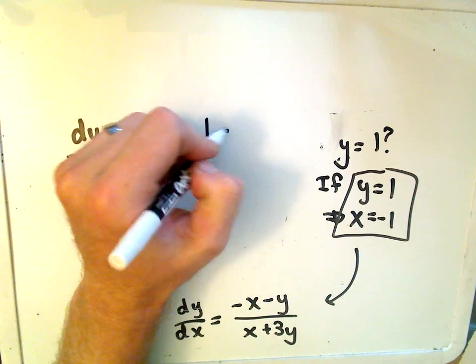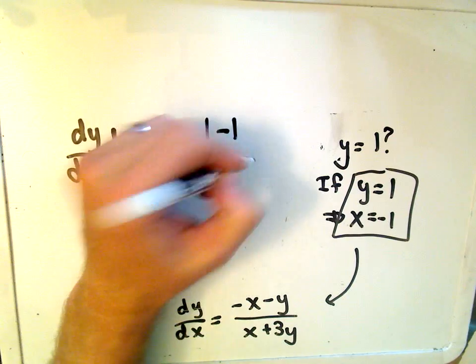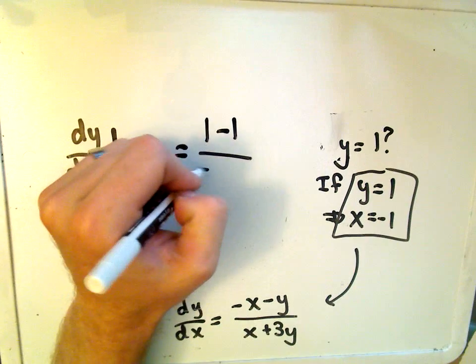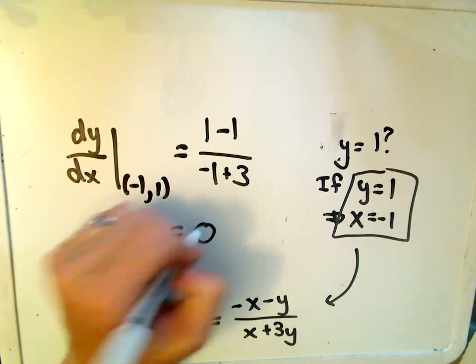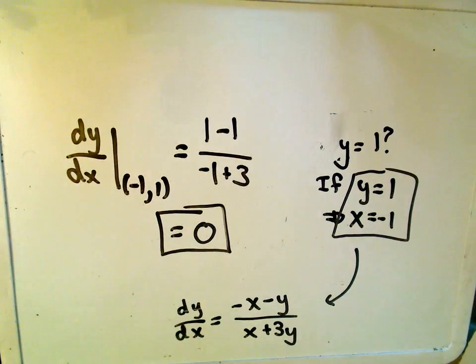I'll get negative negative 1 or positive 1 minus 1. Well, we'll get negative 1 plus 3. We're getting 0 on the top, and that means that our derivative is simply going to have value 0. So that'll be the answer for problem number 1. The slope of the tangent line at that point would be 0.